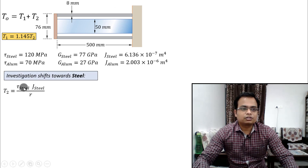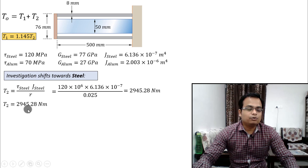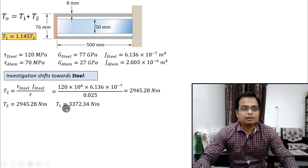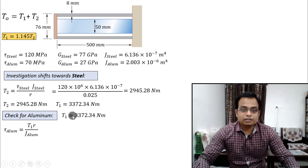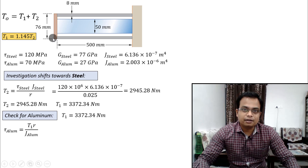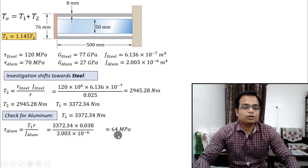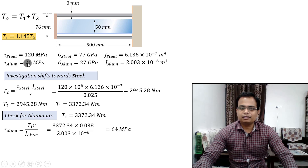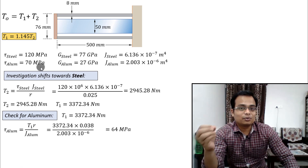Now let's calculate T2 for steel using τ = 120 MPa, J-steel = 6.136×10⁻⁷ m⁴, and r = 25 mm. Plugging in gives T2 = 2945 Nm. Substituting this into the T1-T2 relationship gives T1 = 3372 Nm for aluminum. Now let's check shear stress in aluminum: T = 3372 Nm, r = 38 mm, J-aluminum = 2.003×10⁻⁶ m⁴. That gives 64 MPa.